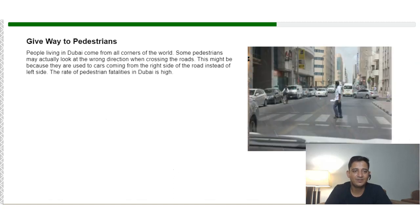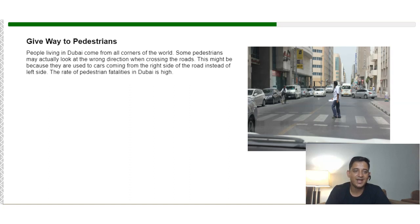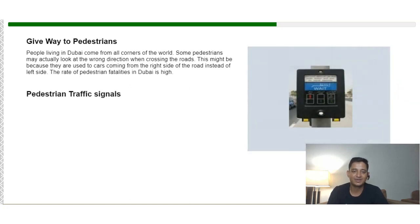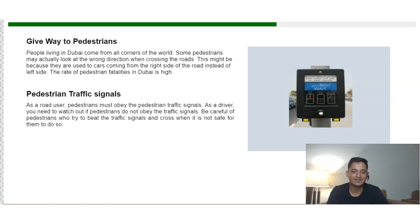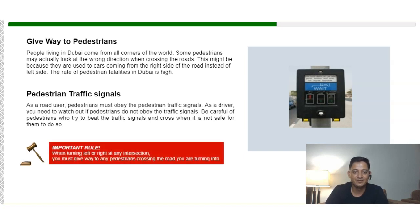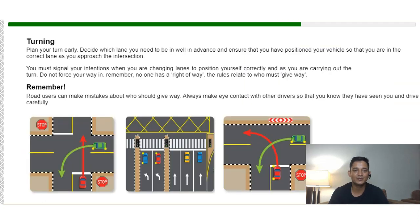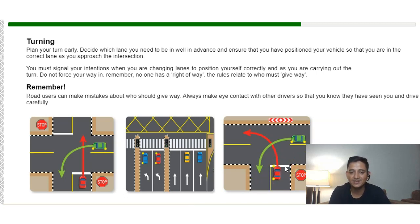Giving way to pedestrians is critical — people in Dubai come from all over the world, and some pedestrians may look the wrong way when crossing, as they may be accustomed to traffic coming from the right. The rate of pedestrian fatalities in Dubai is high. As a driver, watch out for pedestrians who do not obey traffic signals or who try to cross when it is not safe. When turning, plan your turn early and decide which lane you need to be in well in advance. A white solid stop line means you must stop and give way.